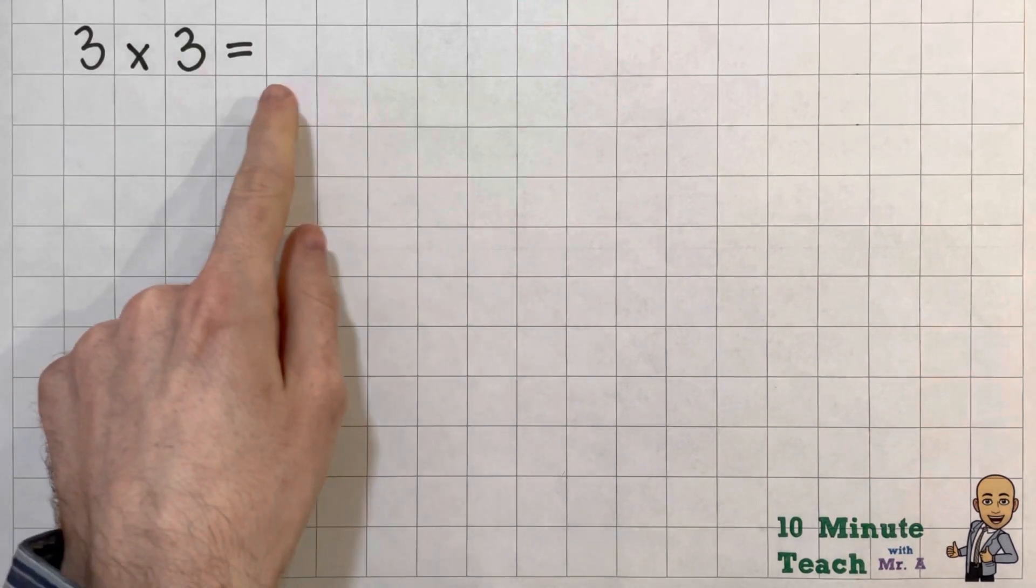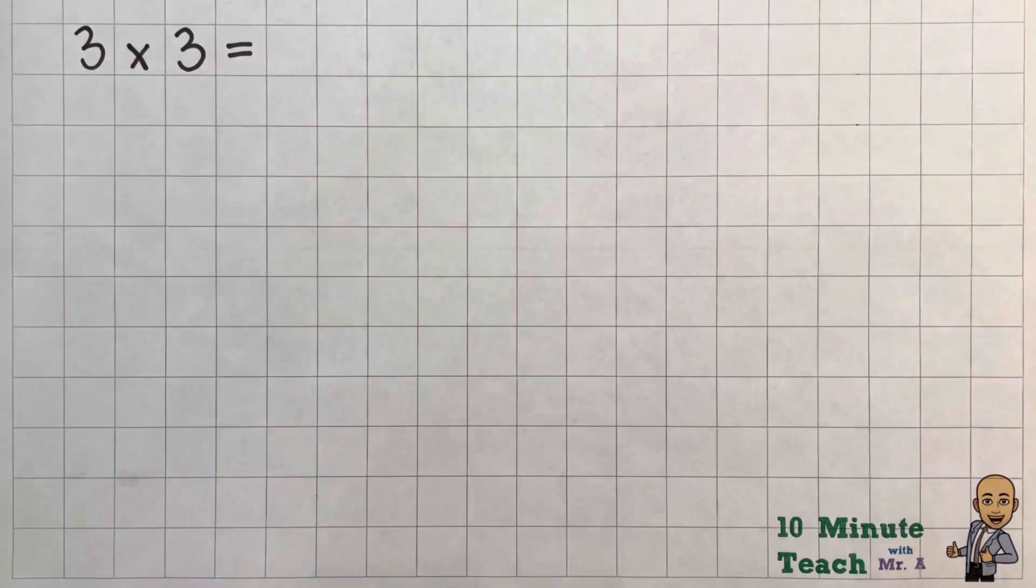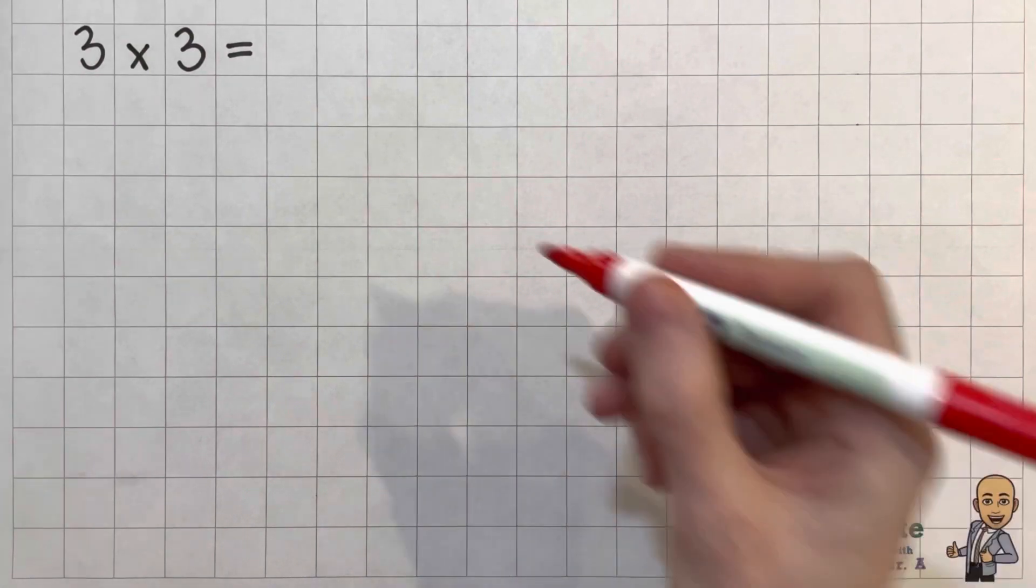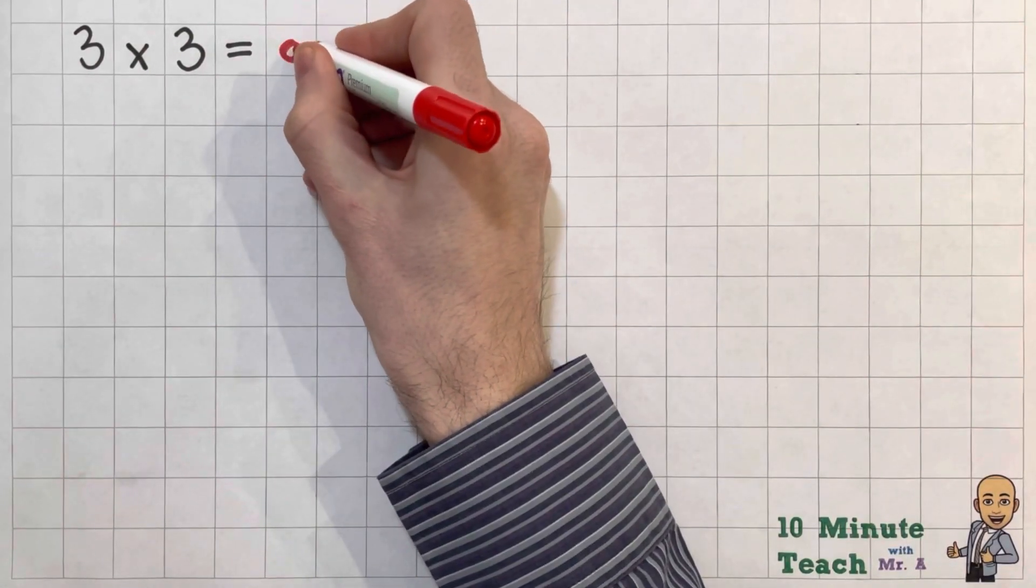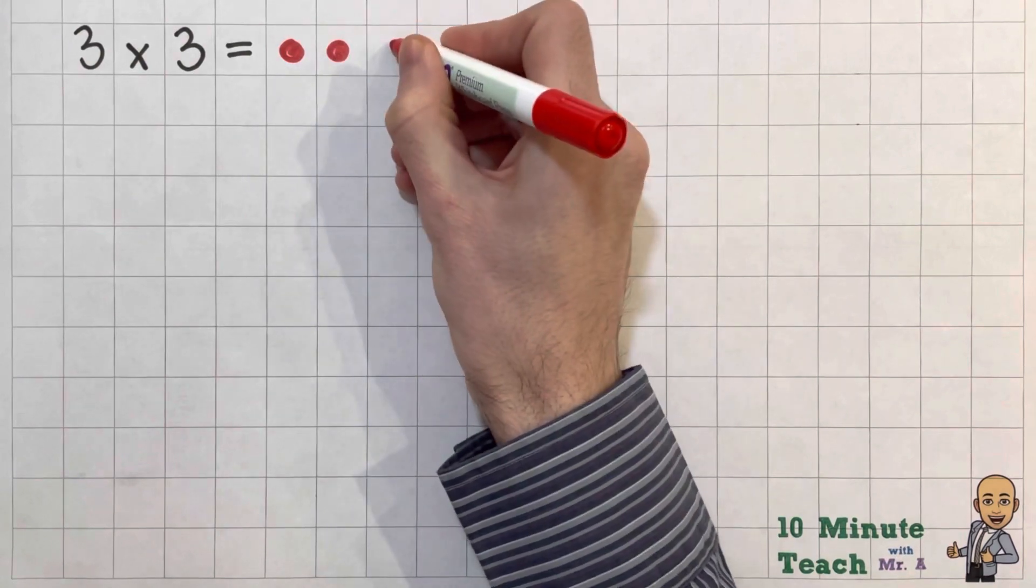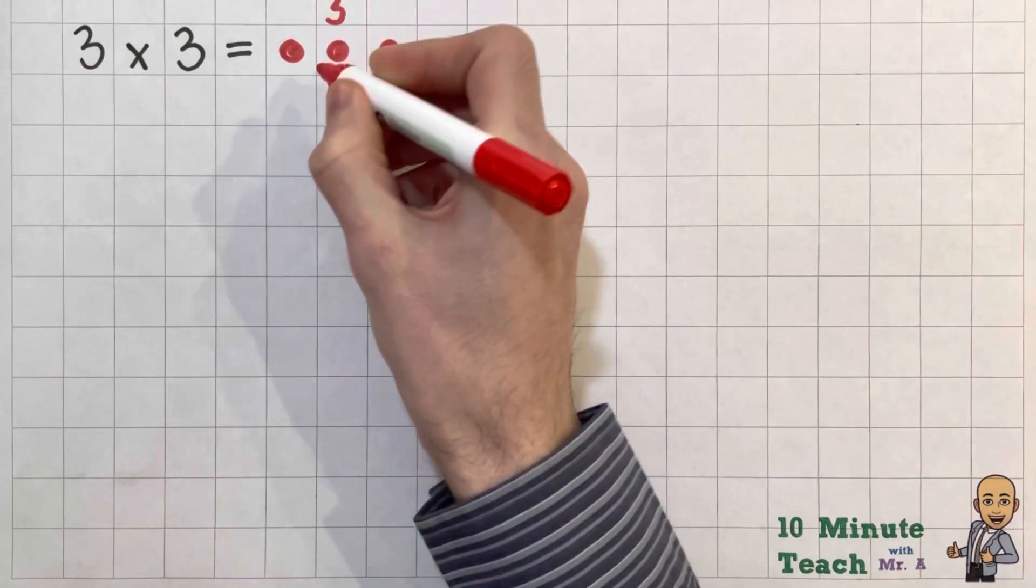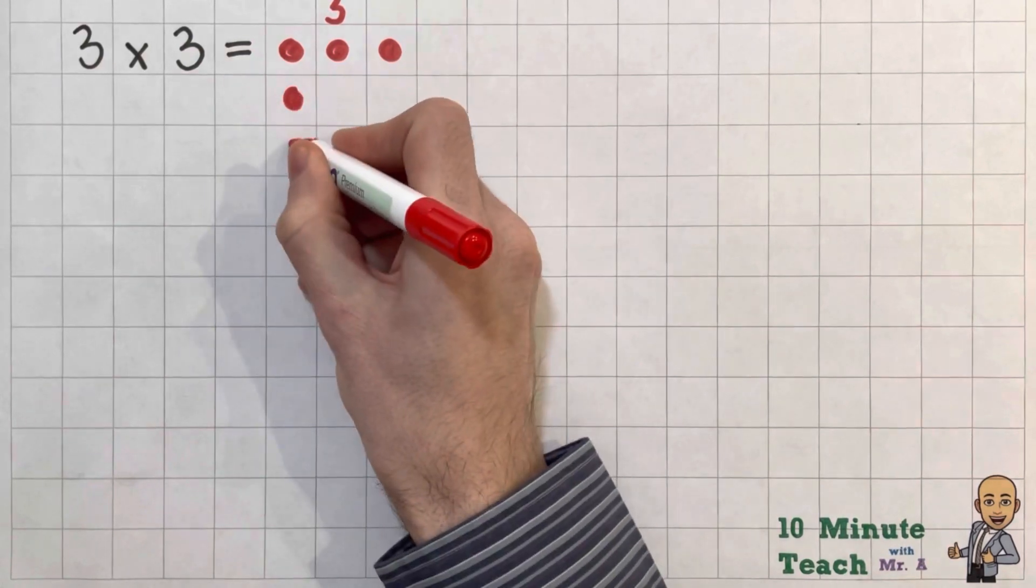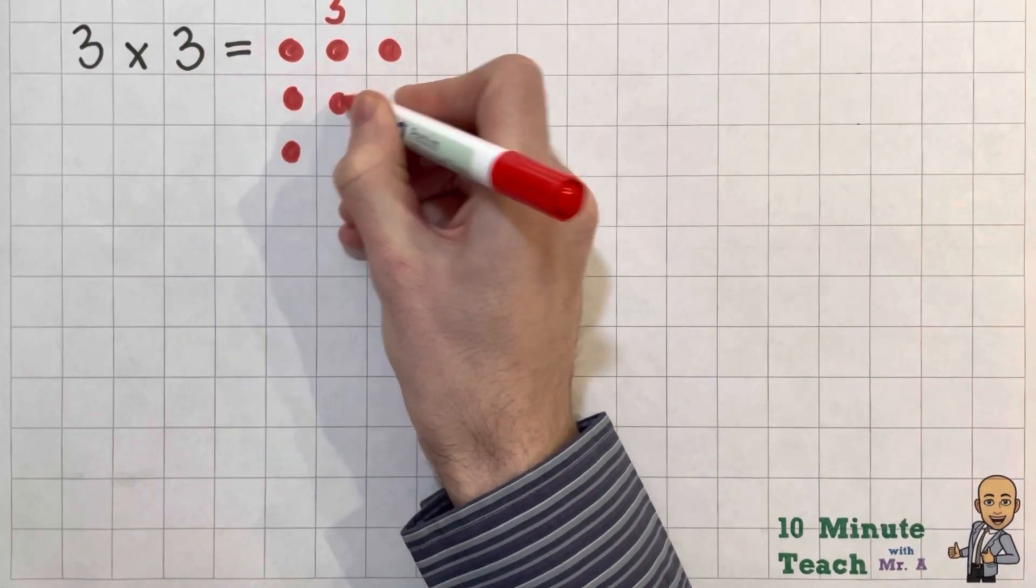First up I just want to draw your attention to this little calculation over on the left. Now 3 times 3, it's quite an interesting one because obviously you're timesing the number by itself. But I just want to show you a little something. So if we did times 3 by 3, you could actually draw it out as an array. So that's 3 and we'll do times by 3 as well.